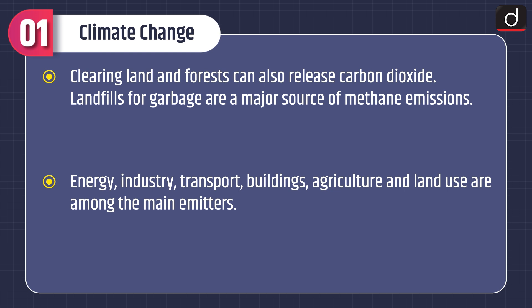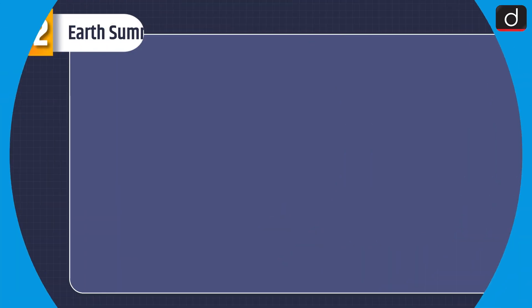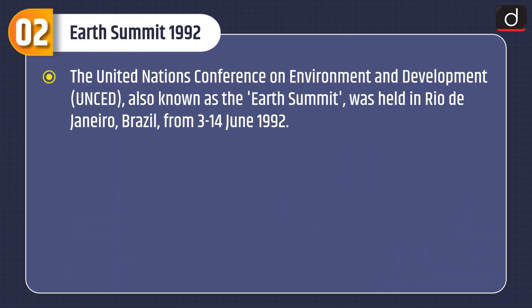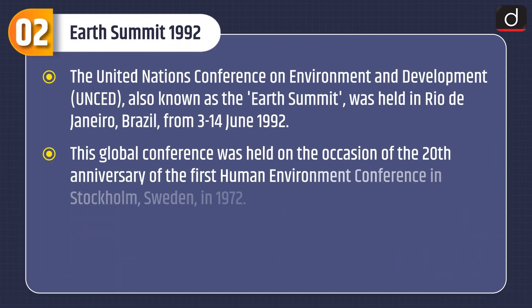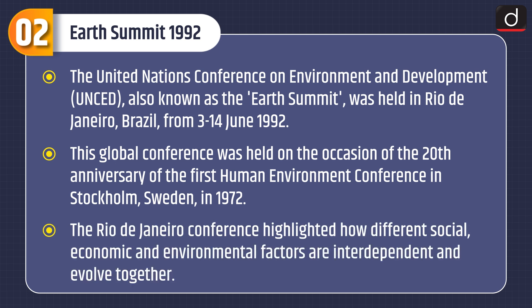Energy, industry, transport, buildings, agriculture, and land use are among the main emitters. Now let's discuss Earth Summit 1992. The United Nations Conference on Environment and Development, also known as the Earth Summit, was held in Rio de Janeiro, Brazil.